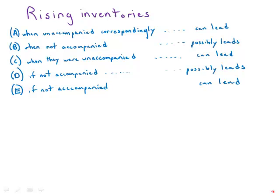Let's start with subject-verb agreement. The subject 'rising inventories' is plural, and notice that we have a mix of singular and plural verbs. So rising inventories can lead - it's not 'rising inventory possibly leads.' The singular